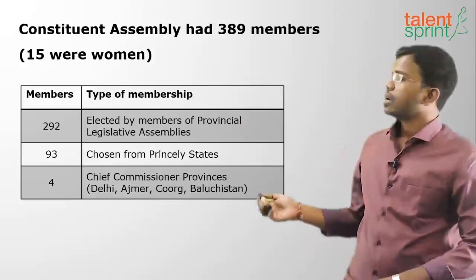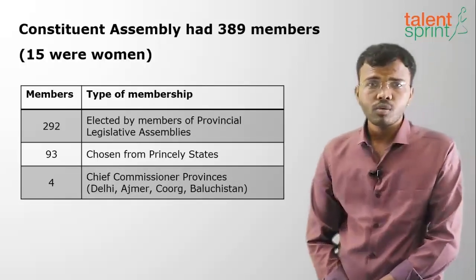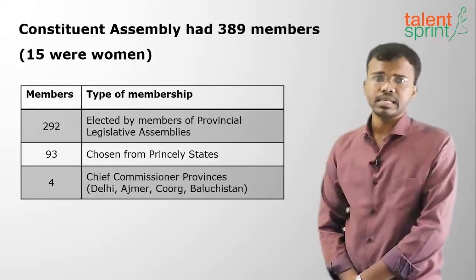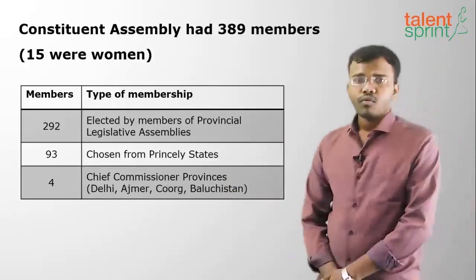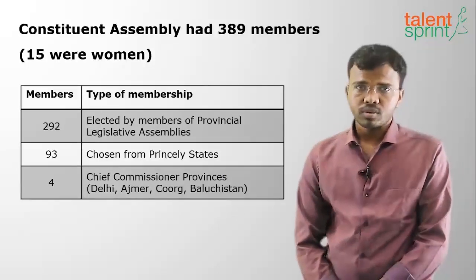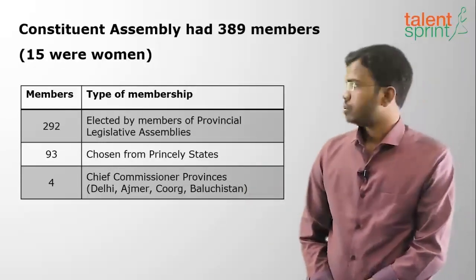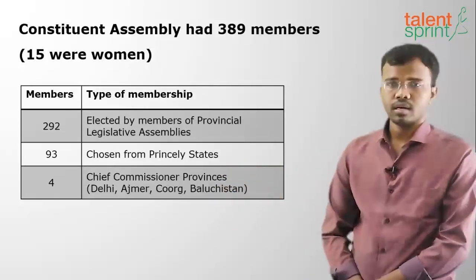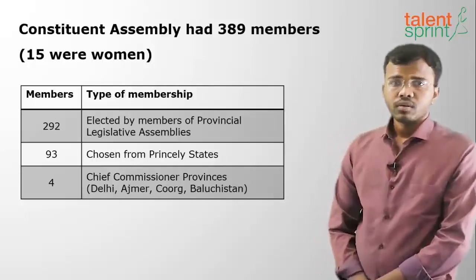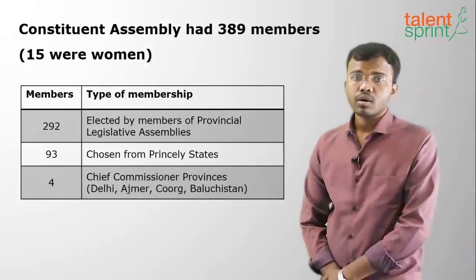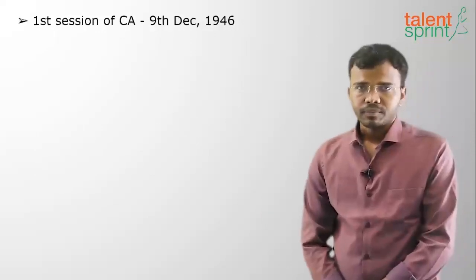93 members were chosen from princely states — those ruled by Indian kings, for example the Nizam of Hyderabad. 4 members were from chief commissioner provinces ruled by British-appointed chief commissioners: Delhi, Ajmer, Coorg, and Balochistan. These totalled 389 members of the Constituent Assembly, tasked with writing a new Constitution for independent India.